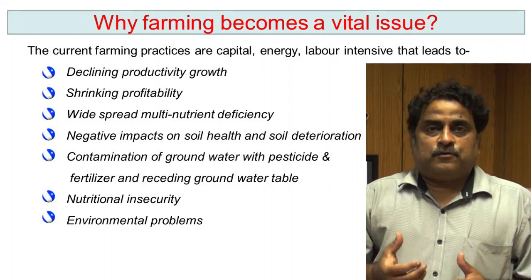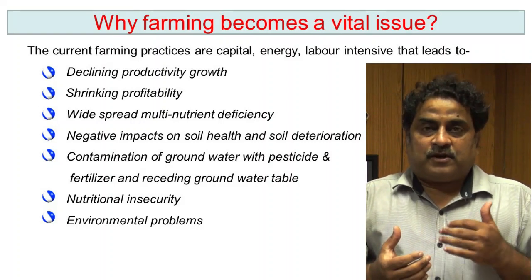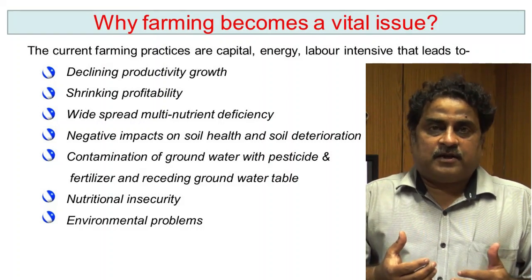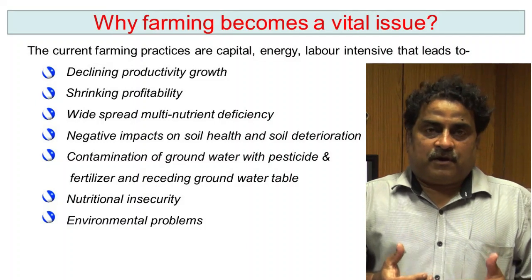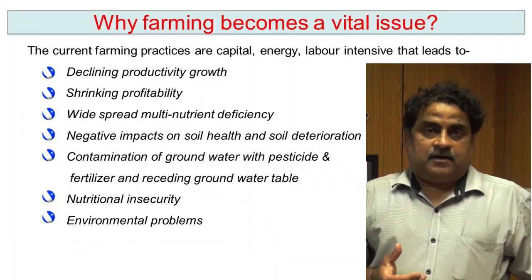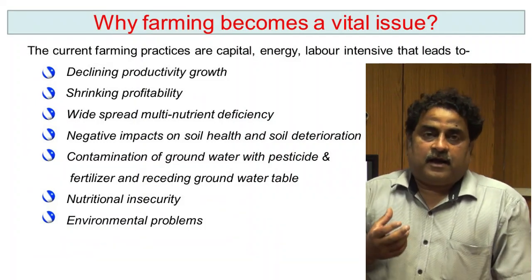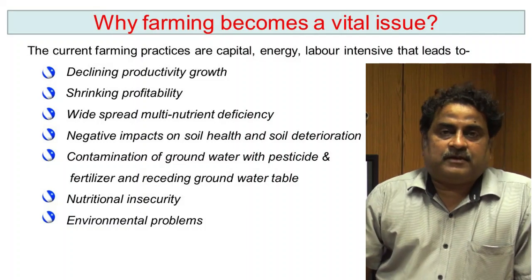That is factor productivity declining. Due to this, the cost of production is increasing, the profitability level of the farmer has declined, and only a very narrow profit is obtained by the farmer.